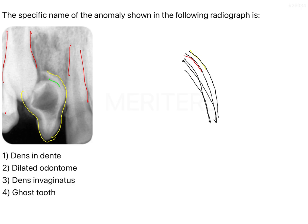Within this radiopacity you again have an entire structure of radiolucency. So basically you have radiopaque, radiolucent, radiopaque, radiolucent — and it all looks like tooth-like structures. Whatever is in yellow is the crown of the tooth, and within the crown you have a small radiolucency. Again within that radiolucency there is a tooth-like appearance — the yellow one and what I'm drawing in pink again is radiopaque and looks like a tooth.